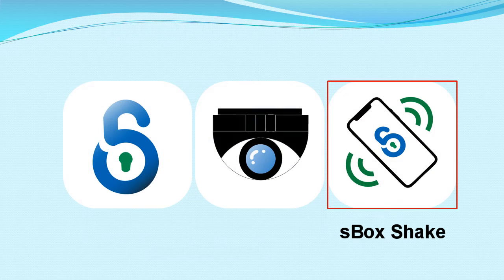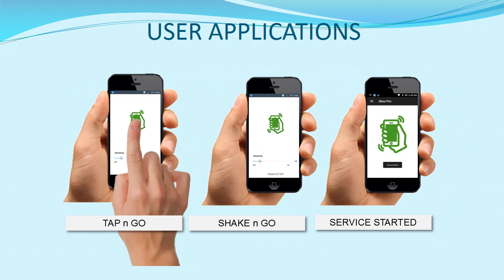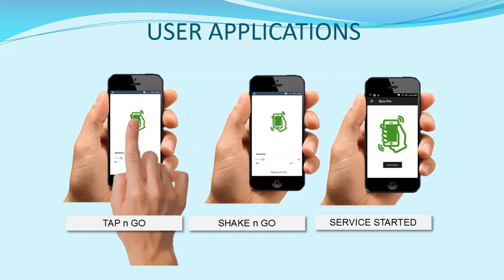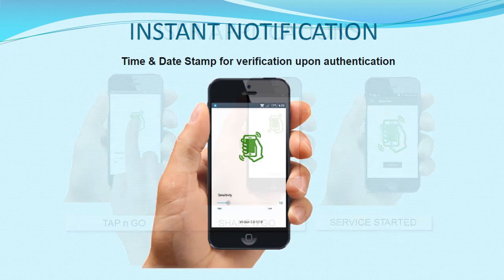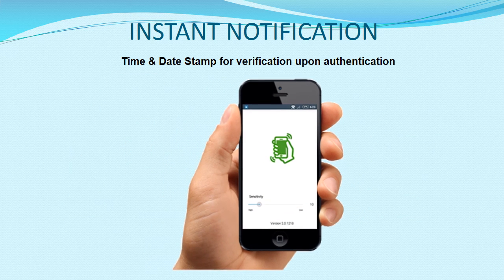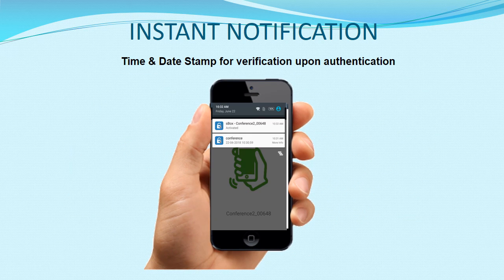The S-Box X Shake Key app can be downloaded from the Play Store or App Store. Tap and go or shake and go to open the door. Shake and go instantly pops up a notification for the authorized user.